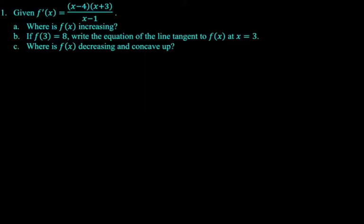Given f prime is x minus 4 times x plus 3 all over x minus 1, where is f of x increasing? Write a tangent line, decreasing, concave up. All right, so standard things, which is pretty much how the problem sets work. They're not revolutionary, they're just practice. Where is f of x increasing? Let's do a sign chart.